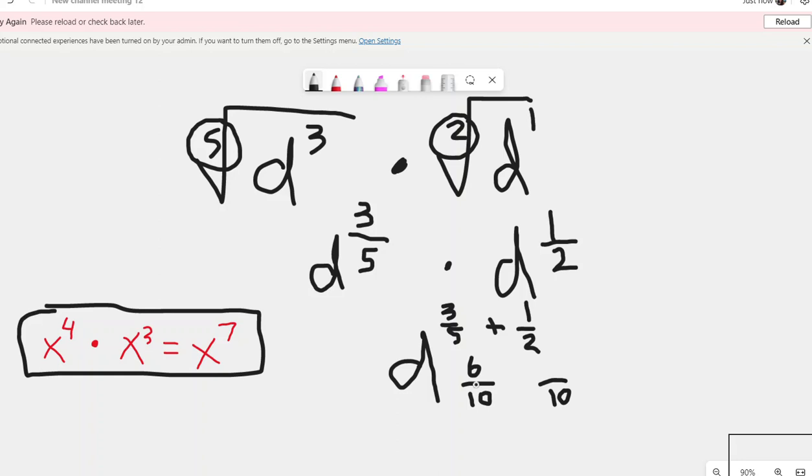One-half is equivalent to two's being multiplied by what to get ten. Multiply the numerator by the same thing as the denominator to make an equivalent fraction, and you get five. And therefore, you can add your fractions now that they have a common denominator. D to the six plus five is eleven, so eleven-tenths. And that would be rational exponent form.